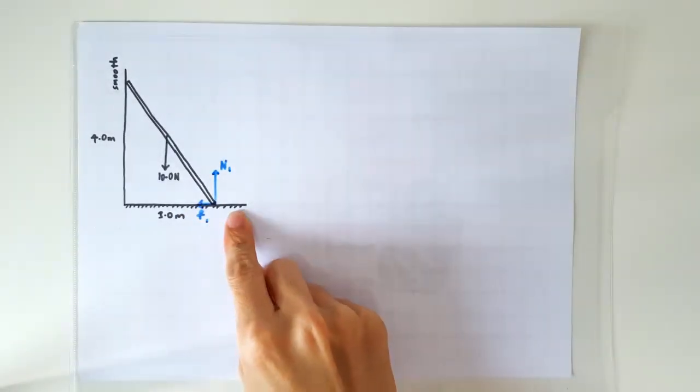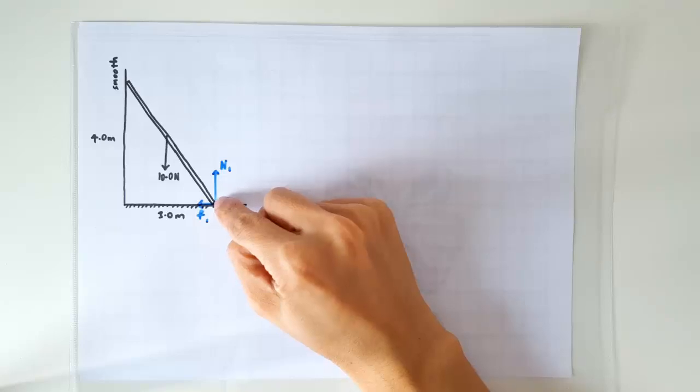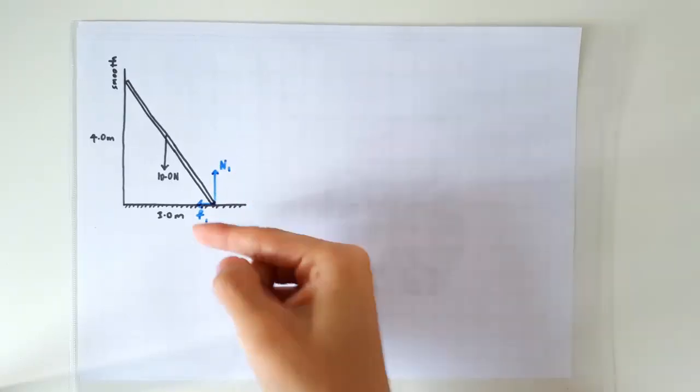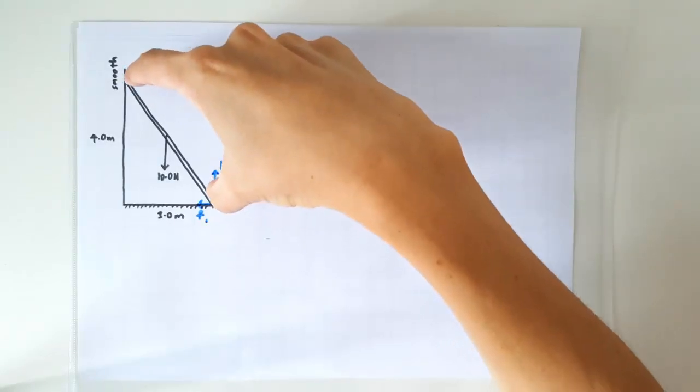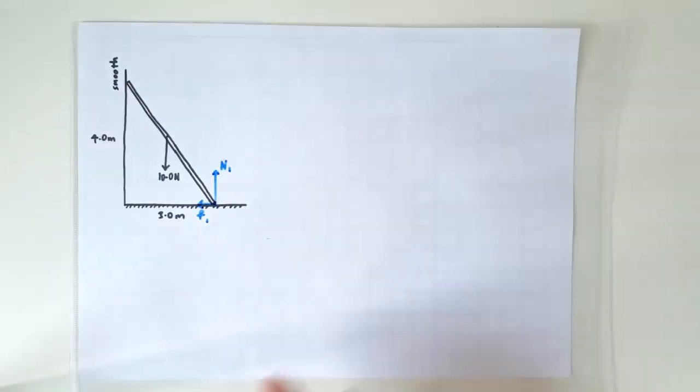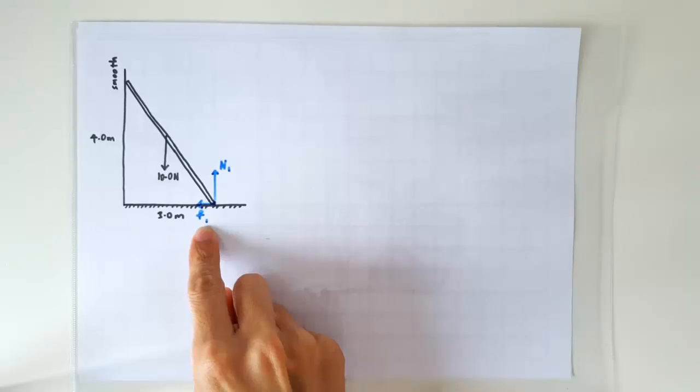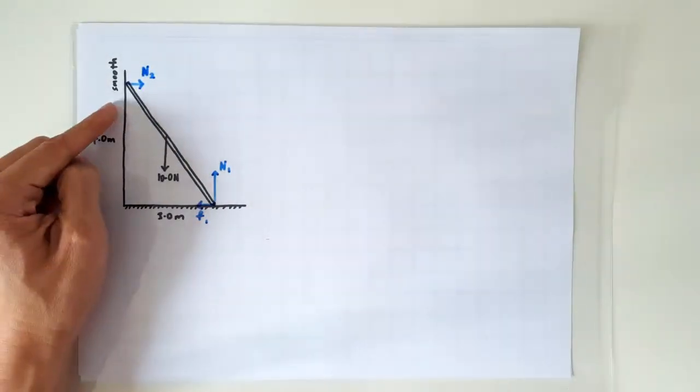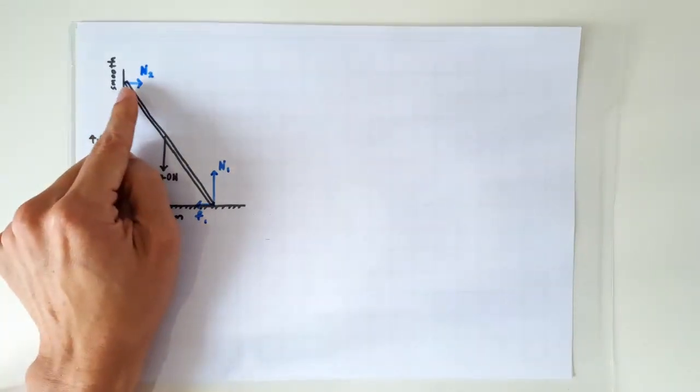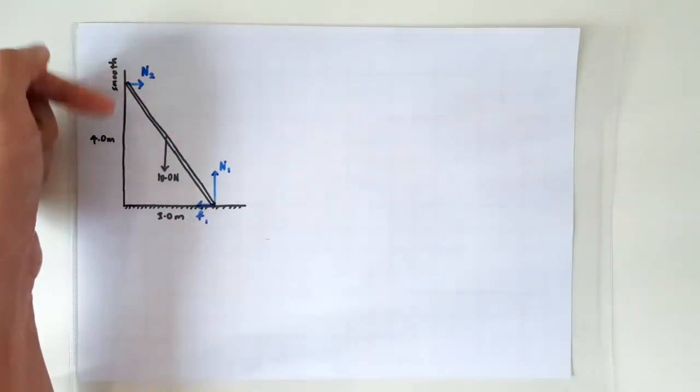Since the floor is rough, we will have both the normal component and the frictional component. The ladder has a tendency to slide rightward, and that's why we know the frictional force must be acting leftward. This is a smooth wall, so we have only the normal component and no frictional component.